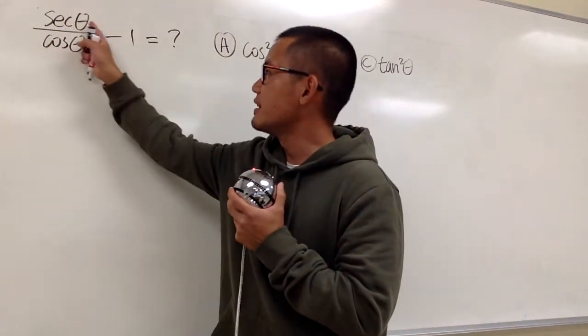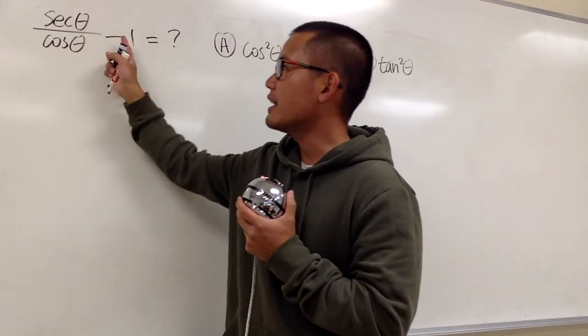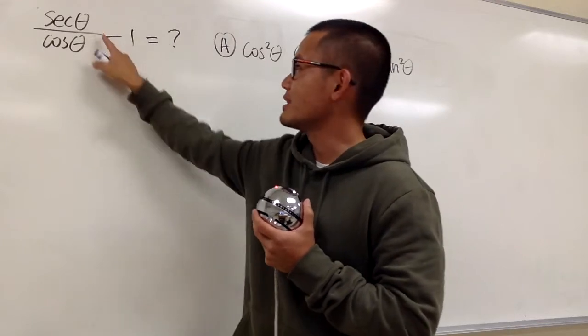Okay, for this one, we have secant theta over cosine theta, and then minus 1 is equal to what?